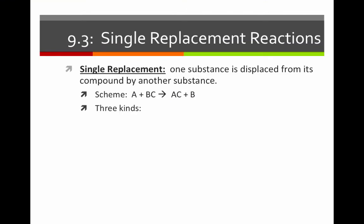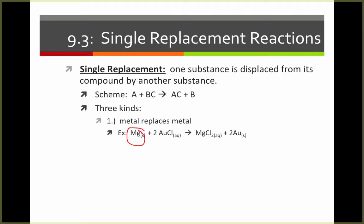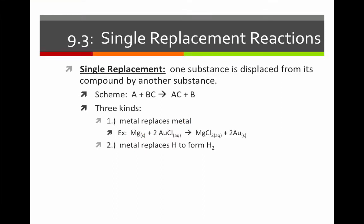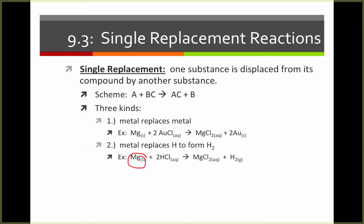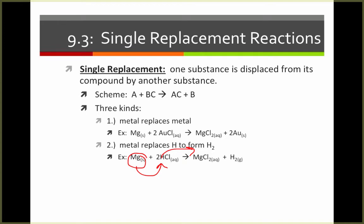There are three kinds of single replacement reactions. We can have a metal replacing a metal. For example, in this case, magnesium metal replaces gold metal to form magnesium chloride and gold. We can have a metal replacing hydrogen to form H2 gas. Again, in this example, magnesium is displacing hydrogen to yield MgCl2 plus H2.